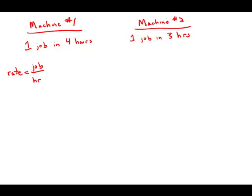Machine number one has a rate of one job in four hours. Machine number two has a rate of one job in three hours. Those are the rates. If we combine the rates, the total rate is the sum of the individual rates.